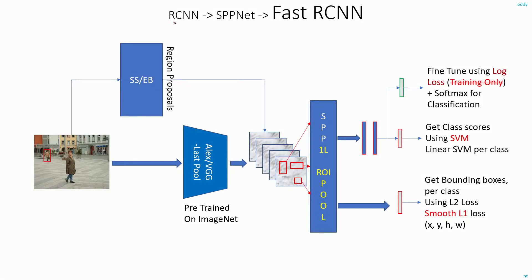Until now we have discussed RCNN and we saw how SPPNet architecture improves on top of it. Now this paper, Fast RCNN, improves on top of the SPPNet architecture. The network you are seeing here is basically the SPPNet architecture. Now let's see step by step what changes Fast RCNN did on top of the SPPNet architecture.